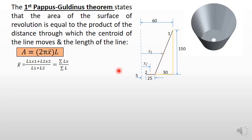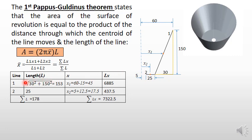Let us prepare this table. There are two lines: line 1 and line 2. Length of line 1 is √(30² + 150²), which equals 153 using Pythagoras theorem. Distance of centroid x₁ is 45 (60 minus 15). Multiplying 153 × 45 gives 6885.